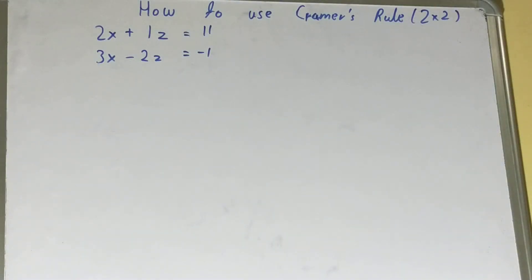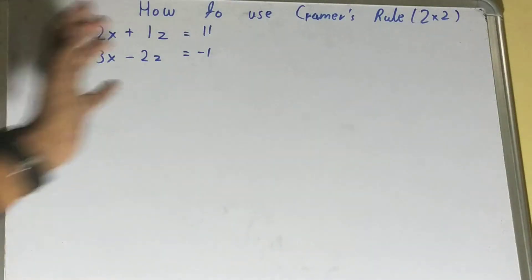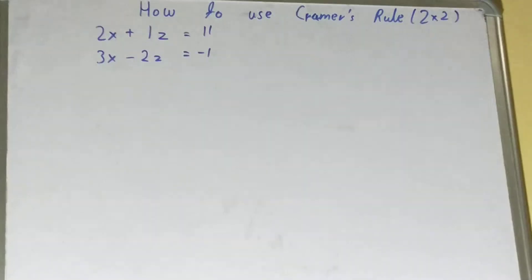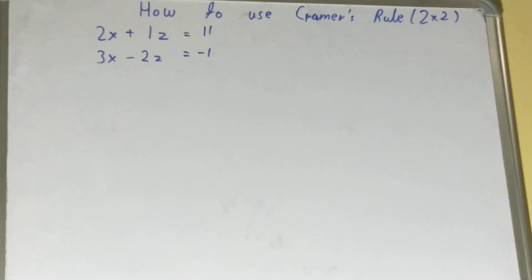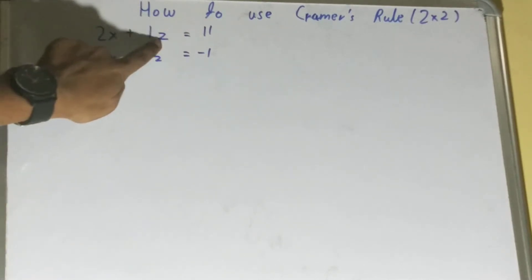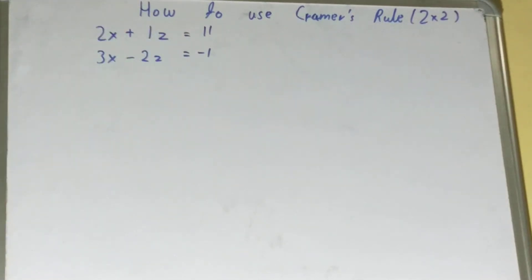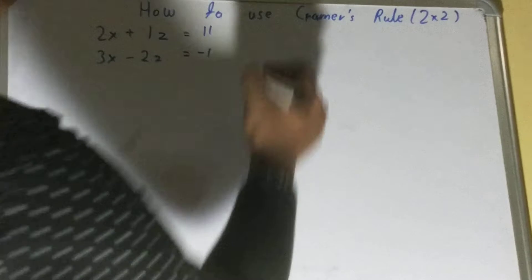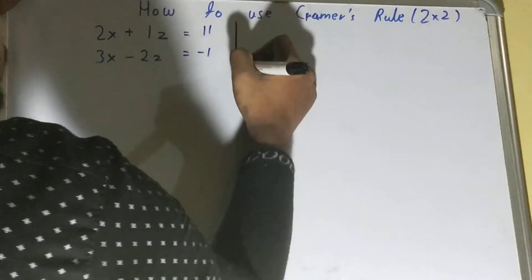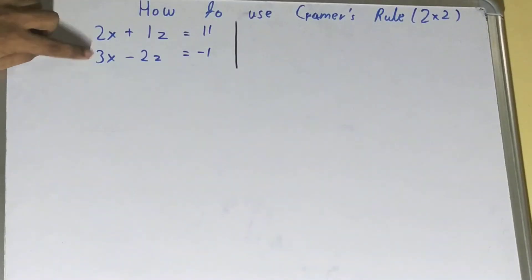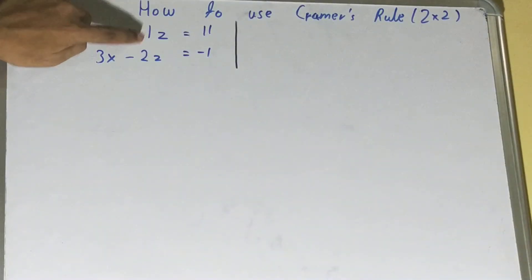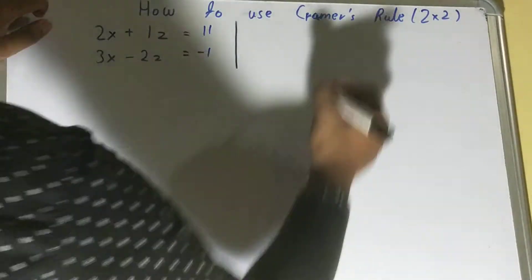Hello friends! In this video I'll be helping with how to use Cramer's Rule for a 2x2 matrix. It's quite easy and very quick compared to other methods. We need to find the value of x and z, so the first thing we need to do is write it in matrix form.